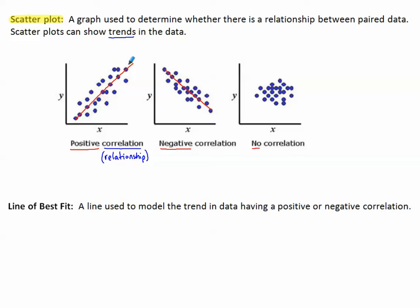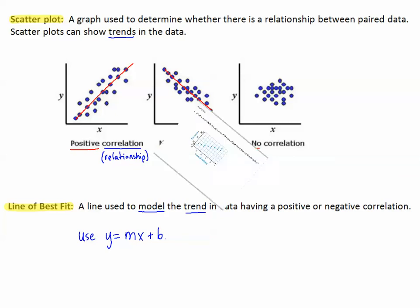The lines drawn through the data of the positive correlation and negative correlation are called a line of best fit. This is a line used to model the trend in the data having a positive or negative correlation. Today we're going to write the equation for the line of best fit using slope-intercept form: y equals mx plus b.